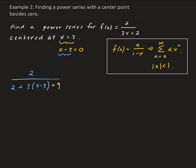Now this is the same as what we're given: 2 divided by 2 plus 3x minus 9 plus 9. That gives us 2 over 3x plus 2. From here, we can rewrite this as 2 over 11 plus 3 times x minus 3.